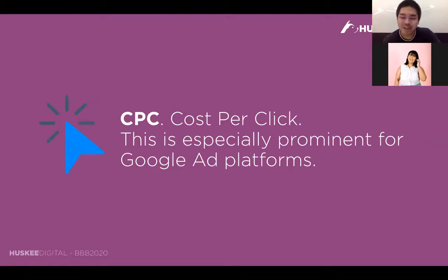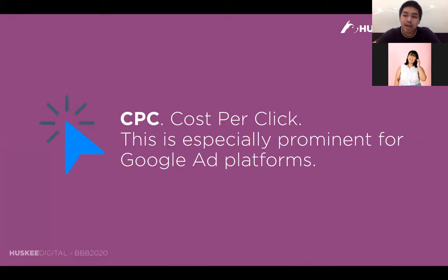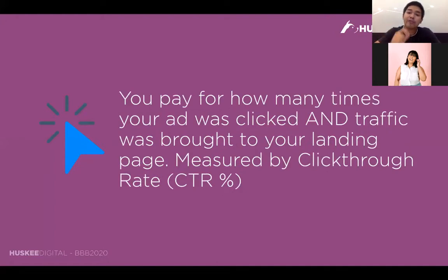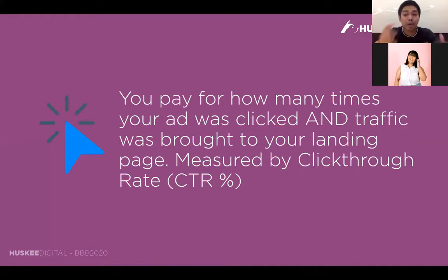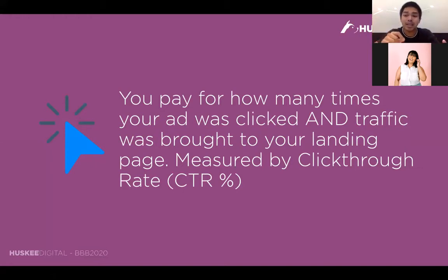Next metric — cost per click, CPC. This is one of the more prominent ones you'll interact with a lot. Very basically, it's how much you're charged for every click. This is especially prominent on Google ad platforms — it's their anchor buying model. You pay for how many times your ad was clicked and how much traffic you were brought. If they click your link, they go to your website — that's typically what you pay for.